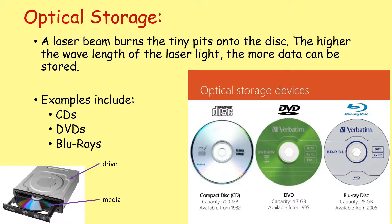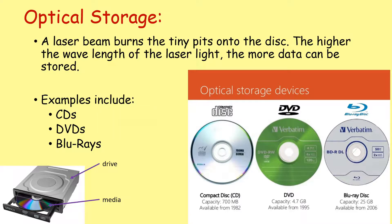A laser beam burns tiny little pits into the disk. The higher the wavelength of the laser light, the more data can be stored on the disk. Typical examples include your compact disks — CDs — your DVDs, your Blu-ray disks. The difference between these, because the disks look very similar, is just the type of laser light used to write to the disk. CDs use a red laser, whereas Blu-ray uses a blue-violet laser that has higher frequency and you record more on the same surface.